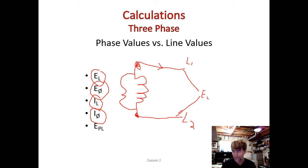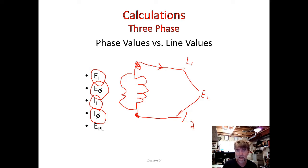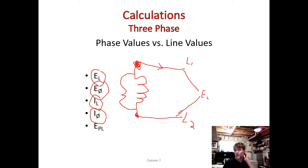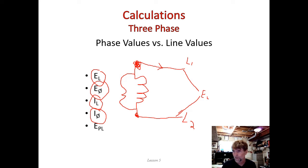Right now I've only drawn a single coil with line one and line two connected to either side, so you might say those are the same — the current through the coil equals the current through line one, and you'd be right. But when I introduce the other two phases, that dot becomes a node, and that introduces the possibility for voltages and currents to change. So E line, I line, E phase, I phase — those are our variables.